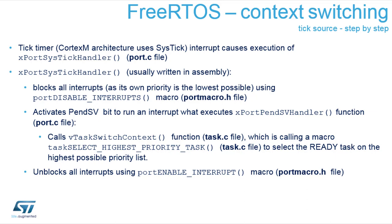The pendSV will call the task switch context, and this will call the macro select highest priority task, which goes through all the listed ready tasks and chooses the one with the highest priority, placed at the beginning of a given list. Then when it is executed, it's put at the end of the list, so it always rotates. When the SysTick handler enables the interrupts again, the pendable SV is executed physically, and the task switch occurs.